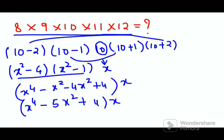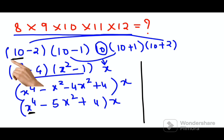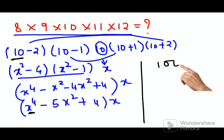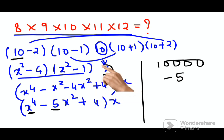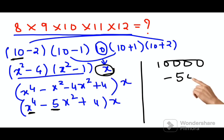Now, x = 10, so x⁴ = 10,000. Then minus 5 × x², and x² = 100, so minus 5 × 100 gives minus 500. So we have 10,000 - 500 = 9,500.